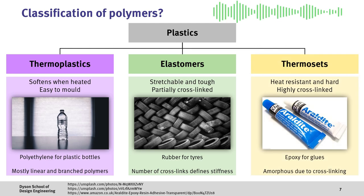And finally, we have thermosetting polymers, which are heat resistant and hard. Here, there is extensive cross-linking between polymer chains, with the structure usually being highly amorphous due to the number of cross-links preventing ordered regions from forming.